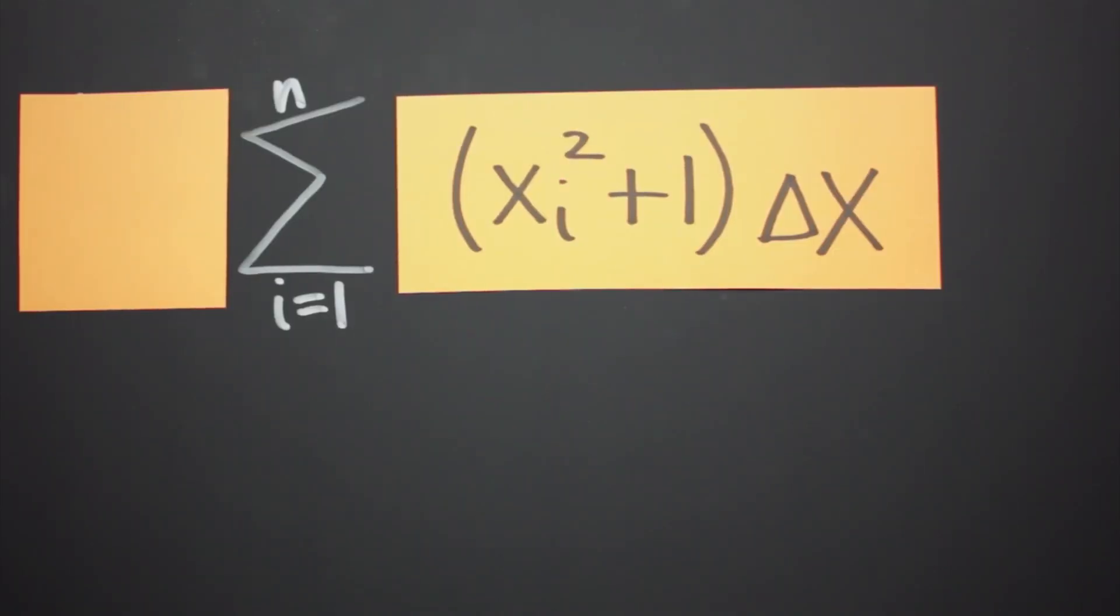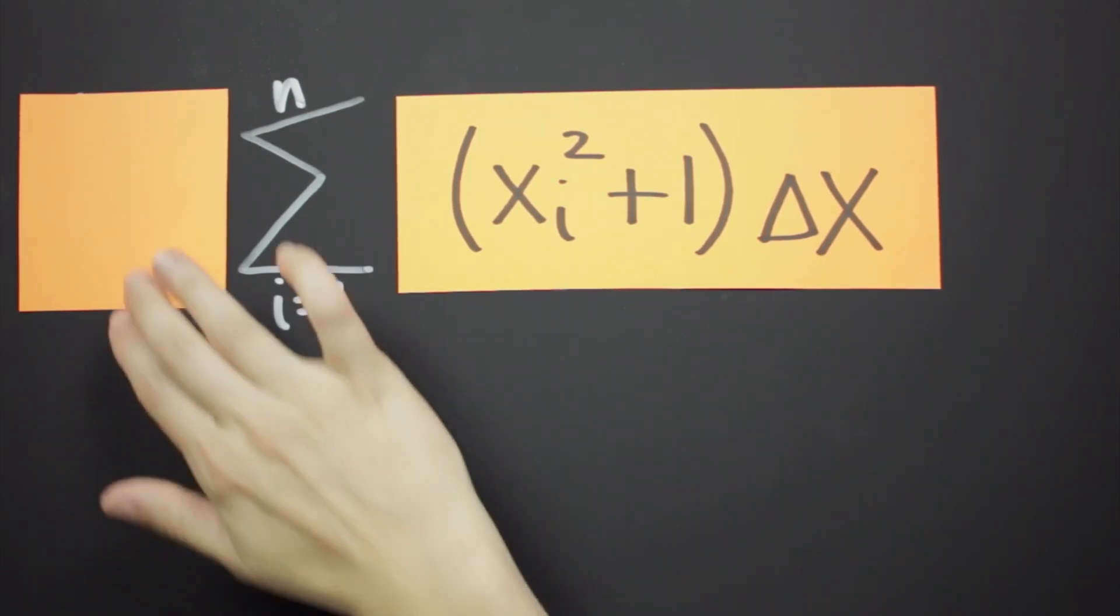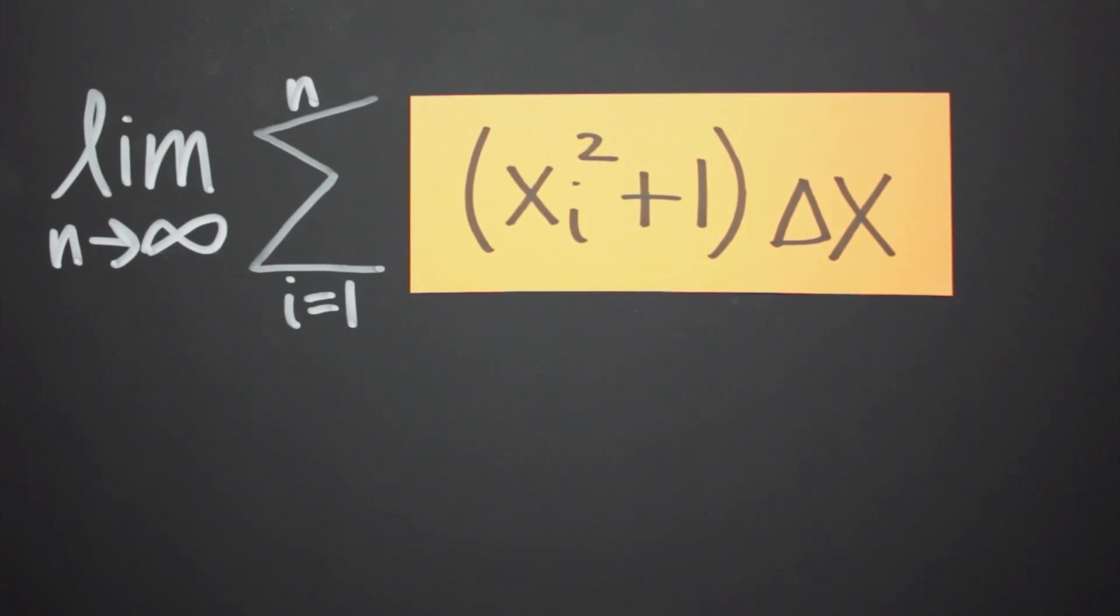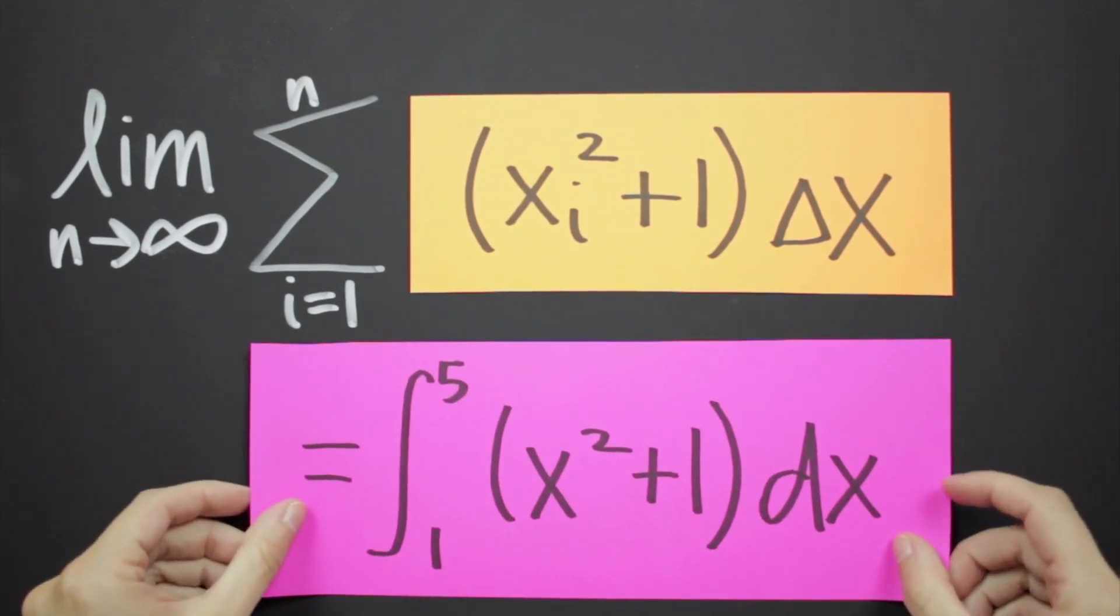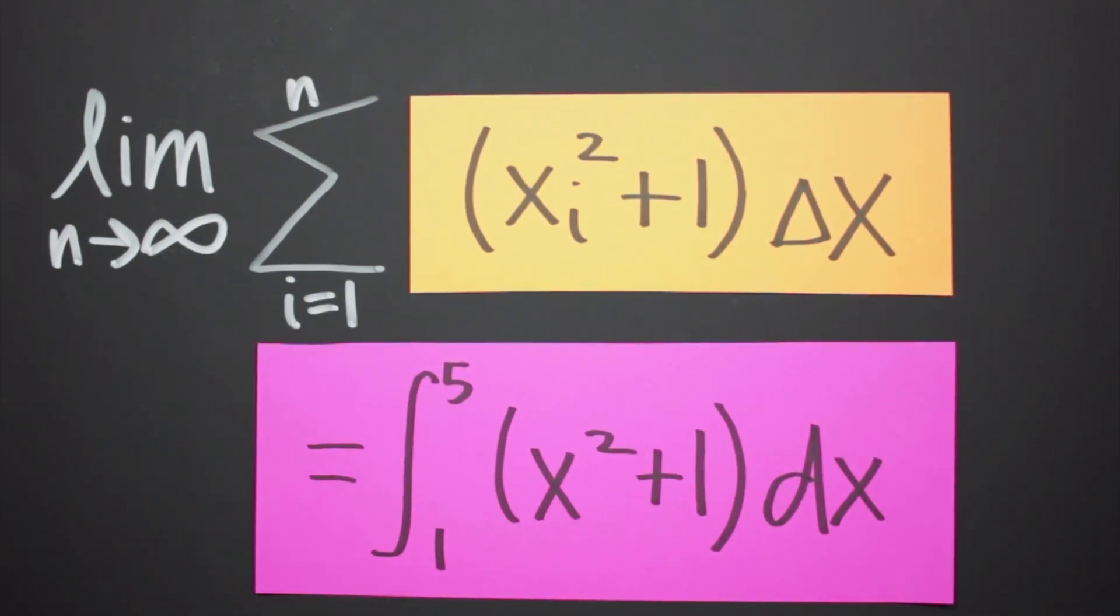So let's put this into practice and pretend for a second that we've been given this Riemann sum. If we're asked to express this Riemann sum as a definite integral on the interval 1 to 5, then we just add this infinite limit out in front of the Riemann sum, and then we can set it equal to the integral from 1 to 5 of the same function multiplied by dx. And just like that, we've converted the Riemann sum into a definite integral.